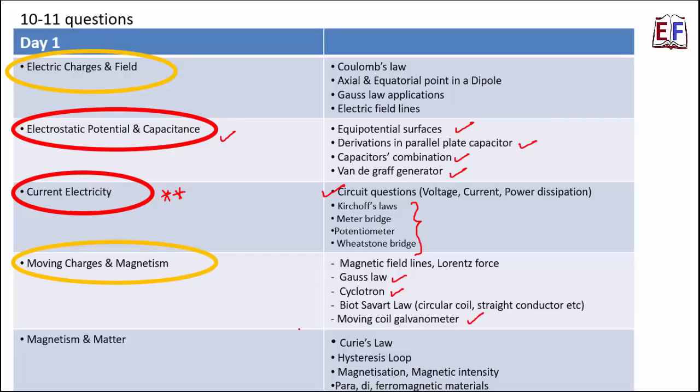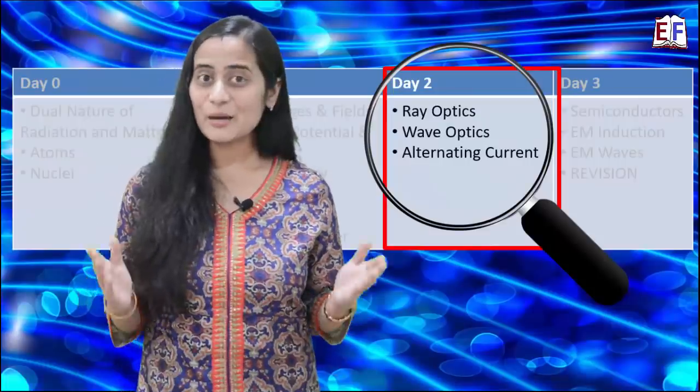Finally, magnetism and matter, which is not a very important lesson from exam perspective, but still, you should not skip it completely. So here you can quickly revise Curie's law, hysteresis loop, magnetization and magnetic intensity, and paramagnetic and ferromagnetic materials. So this was all about Day 1. We have come on Day 2. Stress has increased, because we are coming back to exams. But I don't see a reason to get worried, because we have already studied a lot of things. And now we are only on Day 2.